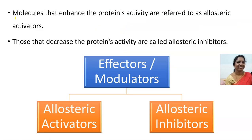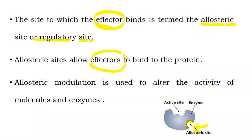Molecules that enhance the protein's activity are known as allosteric activators. The word allosterism comes from 'allo' meaning 'other' and 'steric' meaning 'space.' These are molecules binding to the other space — the usual space is the active site, while the other space here is the allosteric site.